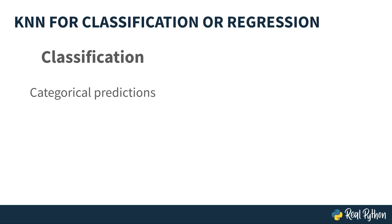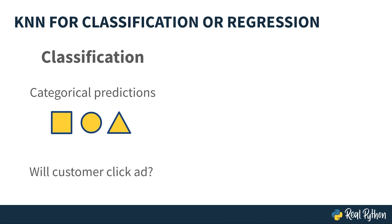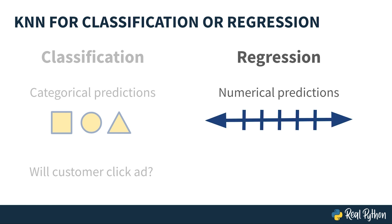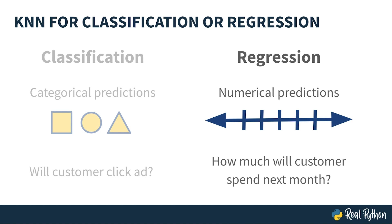In classification, you're trying to build a model that makes categorical predictions, such as whether an observation is a square, circle, or triangle. For a real-world example, you might train a classification model to predict whether or not a customer will click on your ad. Regression problems, on the other hand, make numerical predictions, or continuous values from a number line. For example, how much money will a customer spend next month? Since the predictions are dollar amounts rather than discrete categories, this is a regression problem. KNN can be used to predict either.